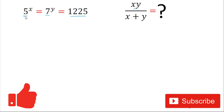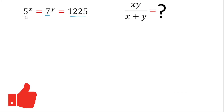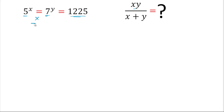In the question we have three numbers: 5, 7, and 1225. If we multiply 5 and 7 we get 35, and 1225 is the square of 35. So from here we'll start with 5 powered by x.